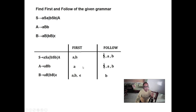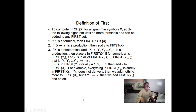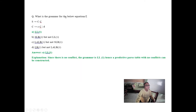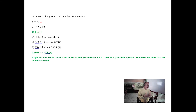FIRST and FOLLOW are for top-down and bottom-up parsing with no backtracking — this is very important. The definition of FIRST — I think I have covered it. For the Biele question grammar, initially there is no conflict, so it will be LL(1). SLR(1) cannot be correct here because SLR(1) is always a superset of LL(1). SLR(1) is a superset of LR(0), and LR(0) is a superset of LL(1). So SLR(1) being the answer here would be wrong. The correct answer is LL(1) and LR(1), as there is no conflict.